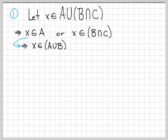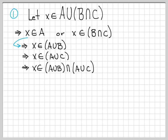Let's think about the first case: X is in A union B intersect C, and specifically X is in the set A. Well, if X is in set A, then X is obviously in the set A union B, because unioning just adds more elements. Similarly, if X is in set A, it must also be in the set A union C, because again, unioning C only adds more things. So when X is in A, it's in A union B and also in A union C — so it has to be in their intersection. Thus X is in A union B intersect A union C, which is exactly the right-hand set.